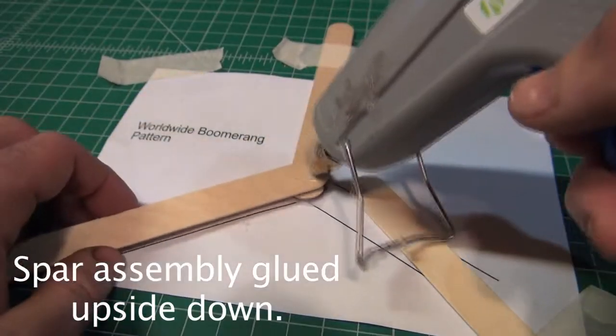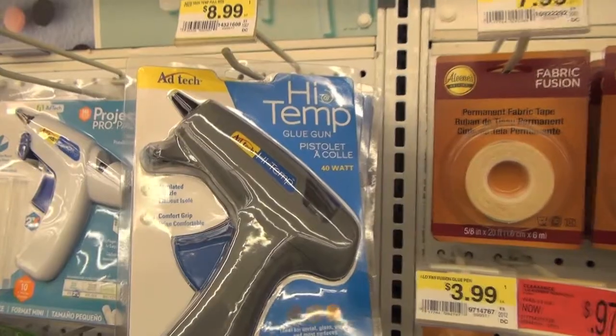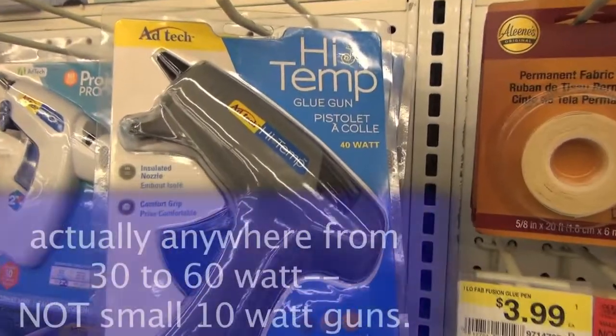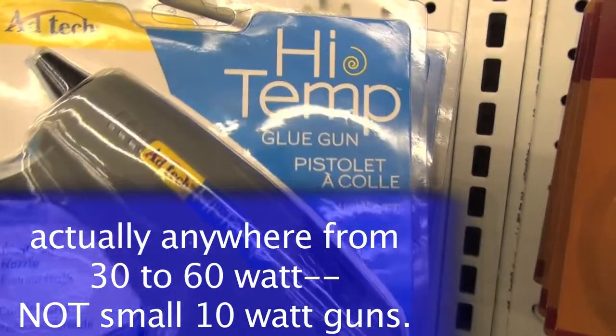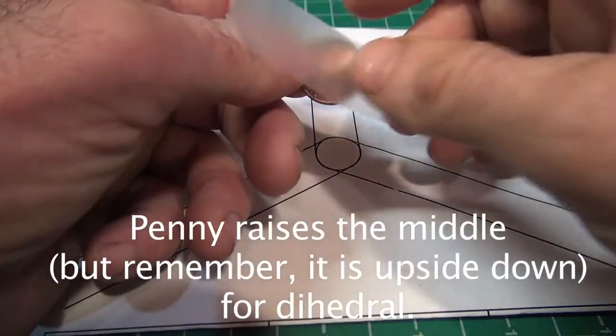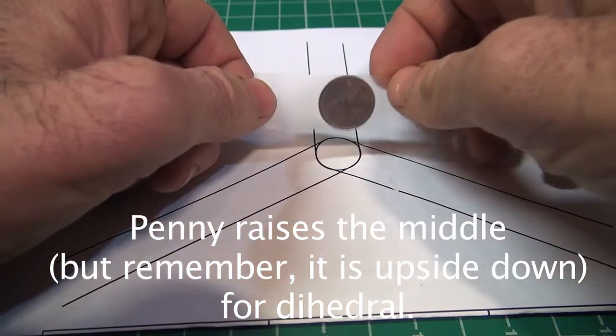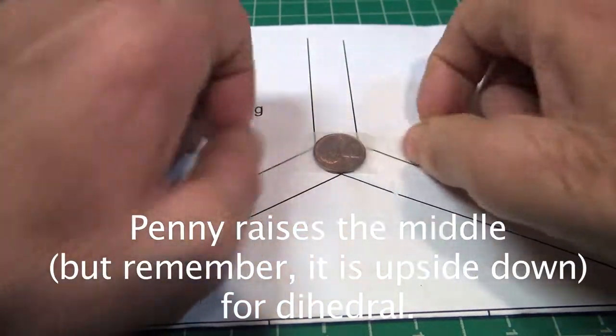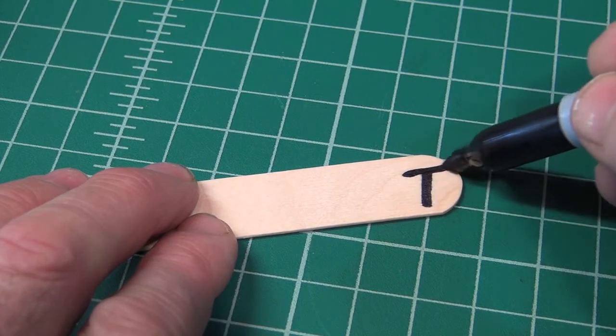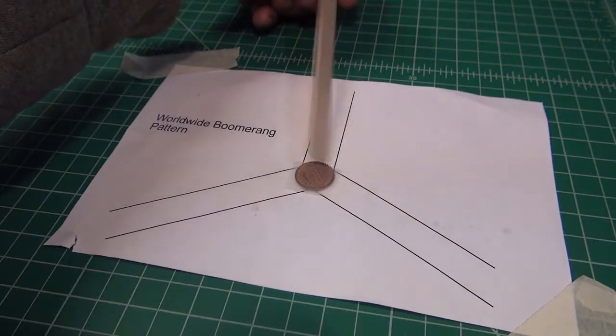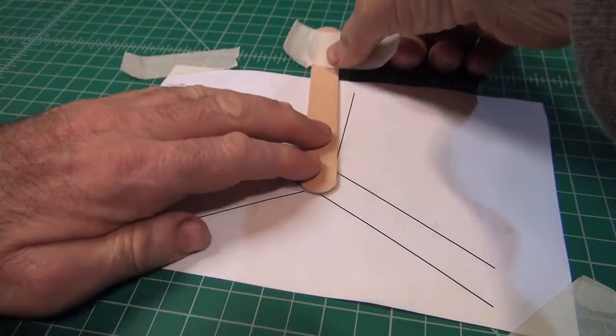I glue the spars upside down. I prefer to use the big 30-watt glue gun for mass production, even though they are higher temperature and can give nasty burns. I tape a penny on the glue pattern to consistently get the right amount of dihedral. I write the T at the end of a tongue depressor, flip it over, and tape it facing down at the hub.